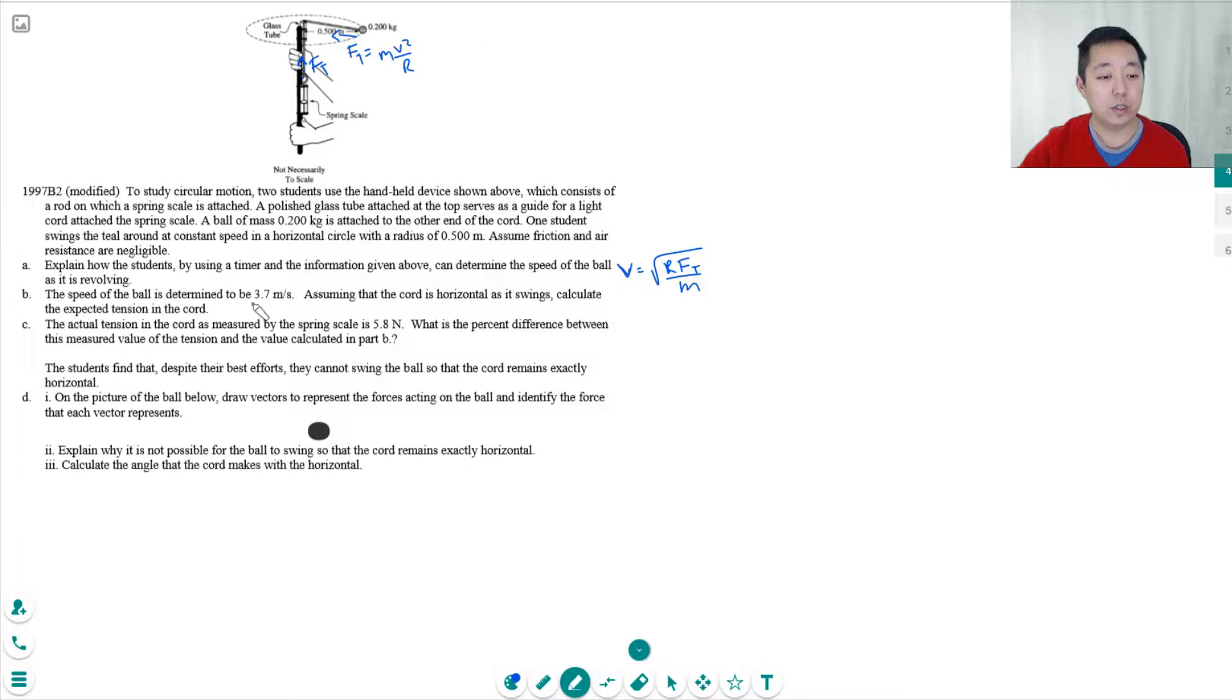The speed of the ball is determined to be 3.7 meters per second. Assuming the cord is horizontal as it swings, calculate the expected tension in the cord. So here FT is equal to MV squared over R. M is 0.2 kilograms. V squared is 3.7 meters per second squared. And then I'm going to divide this by R, which was 0.5 meters. I have to use a calculator for this.